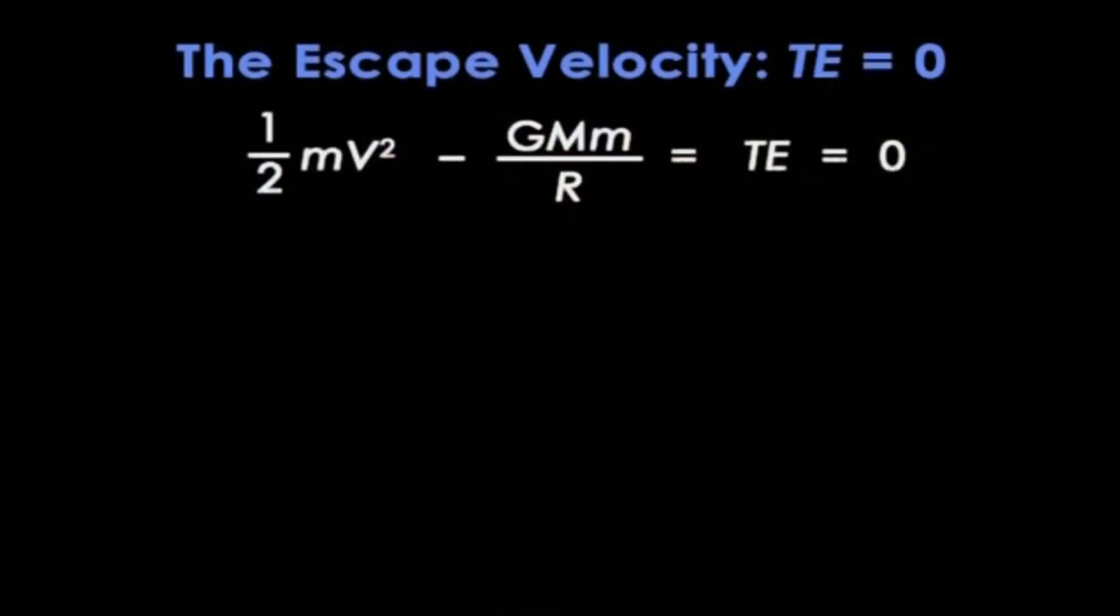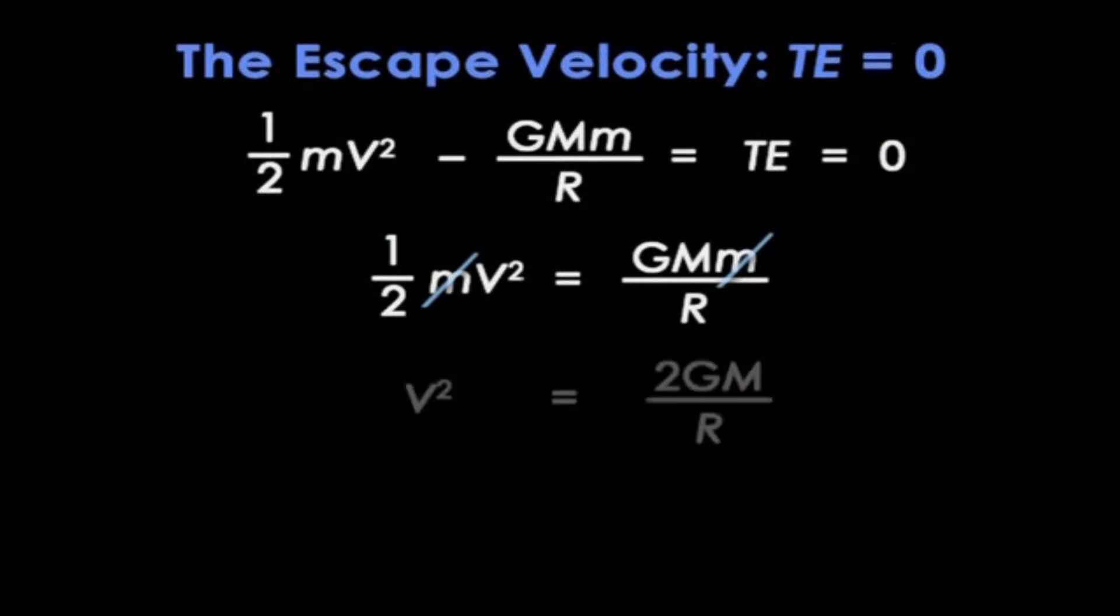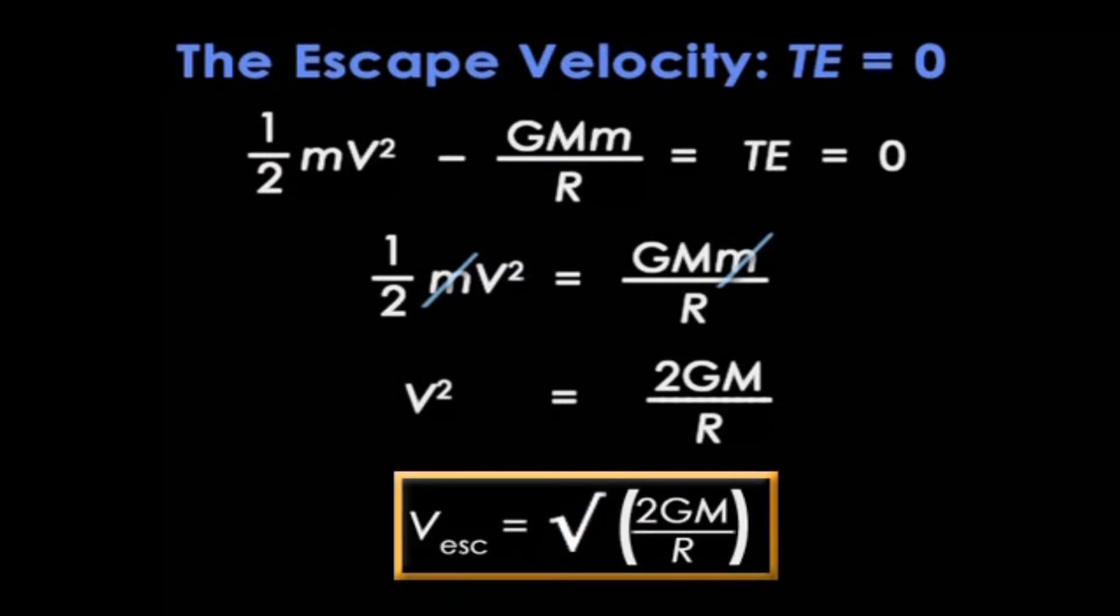So now let's look more carefully at this boundary condition between re-collapse and infinite expansion. Here's the condition in equation form. The kinetic and gravitational energies are perfectly balanced. The total energy is zero. So let's just bring the gravitational term to the right. Let's cancel the little m's, bring the half across, to get v² = 2GM/R. And then let's take the square root of both sides. Notice I've now called this v_escape, the escape velocity. It's the critical speed I must launch the rock if it's not going to come back down again.